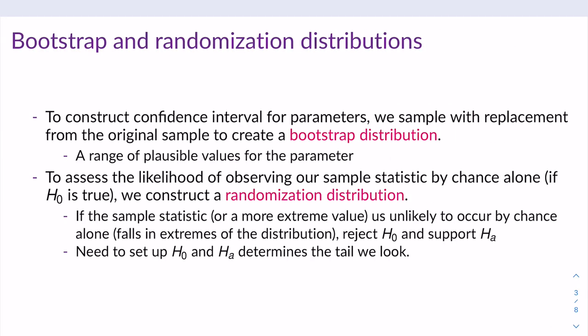Let's begin by reviewing bootstrapping and randomization distributions. To construct confidence intervals for parameters, if we have just one sample, we're going to take that original sample and take a sample from it with replacement of the original sample size. We calculate our sample statistic of interest, and we repeat this process 10,000 times. This gives us a bootstrap distribution, within which we can come up with a range of plausible values for our population parameter. Assuming our sample is a random sample, we can assume it's representative of our population, and that's why we can do this. So the bootstrap gives us a range of plausible values for the parameter.